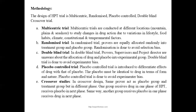Now, what is a placebo-controlled trial? Placebo is a substance which mimics the drug in its form and quality — you cannot differentiate a drug and placebo by merely looking at it. Placebo is introduced in a trial to differentiate the effect of the drug from that of the placebo. Placebo must be identical to the drug in terms of form and nature. A placebo-controlled trial is done to avoid experimental bias.